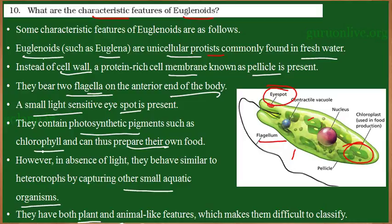They have both plant and animal-like features. Like plants, they can undergo photosynthesis and are autotrophs. Like animals, they can move from one place to another through flagella, and sometimes they are heterotrophs when light is not available. They are sometimes referred to as connecting links between plants and animals.